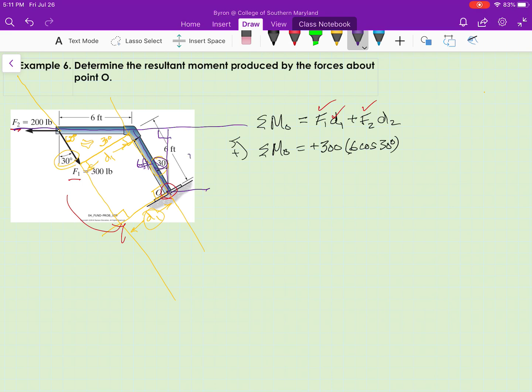Here's D2. It's that adjacent side to the 30 degree angle in the right triangle. So I can write the second part of my moment equation. And I need to decide if this is going to be a positive or negative moment.